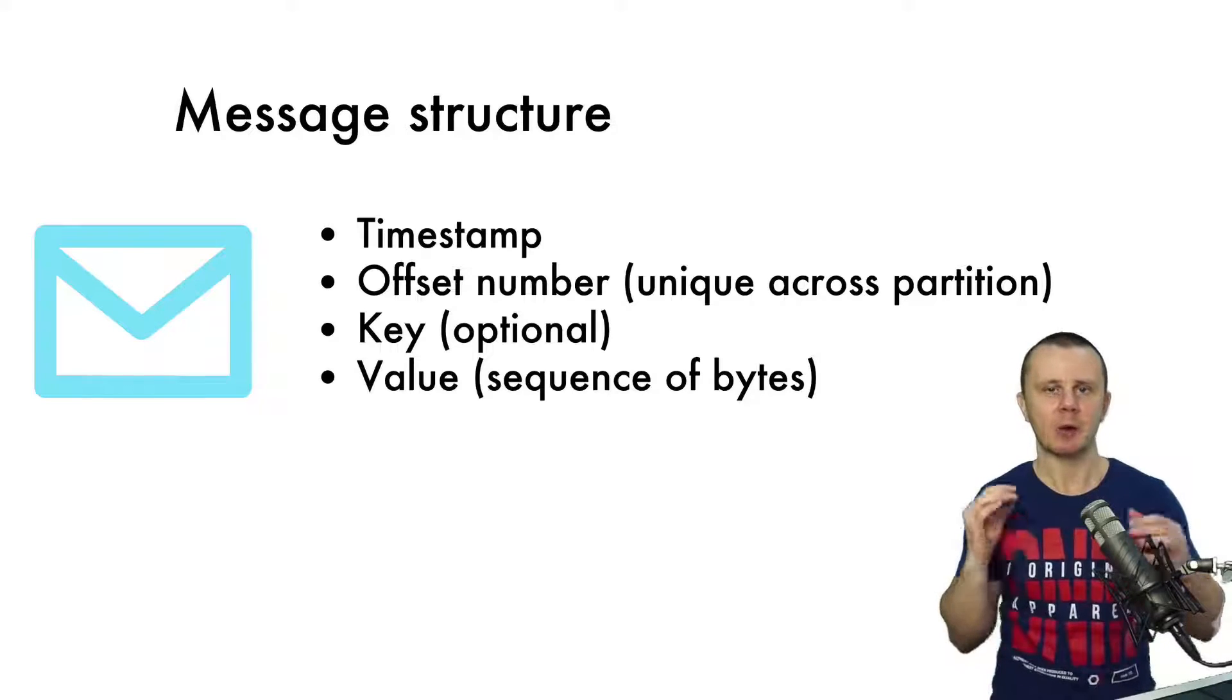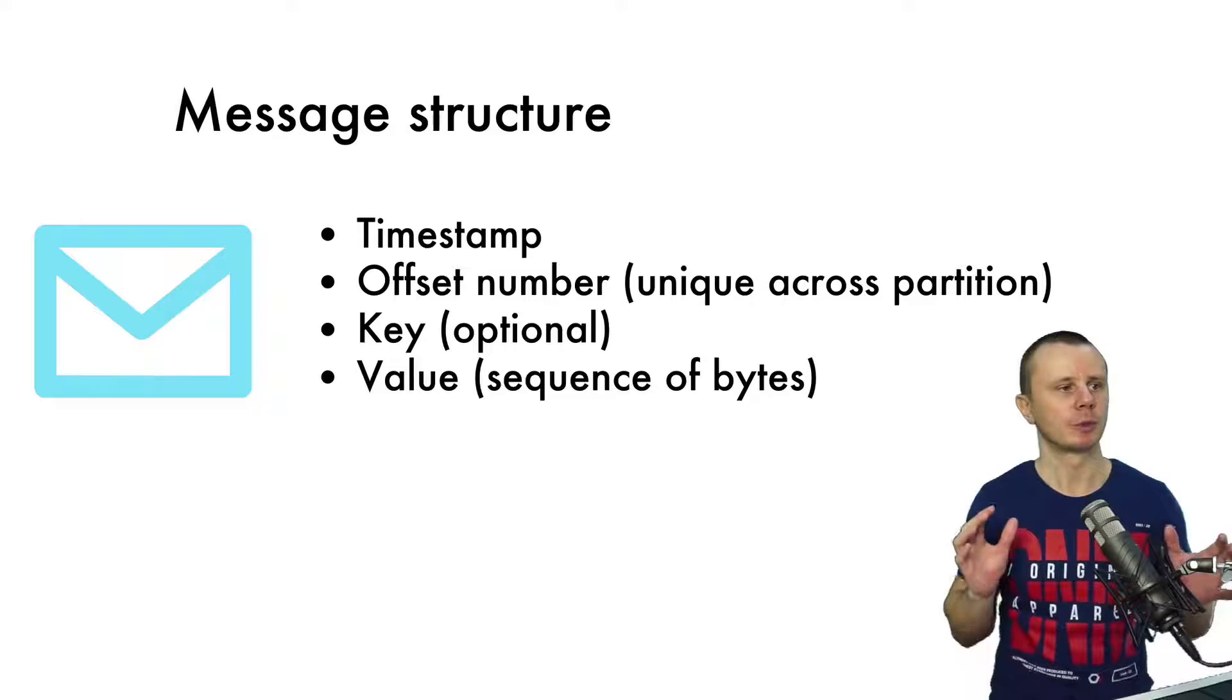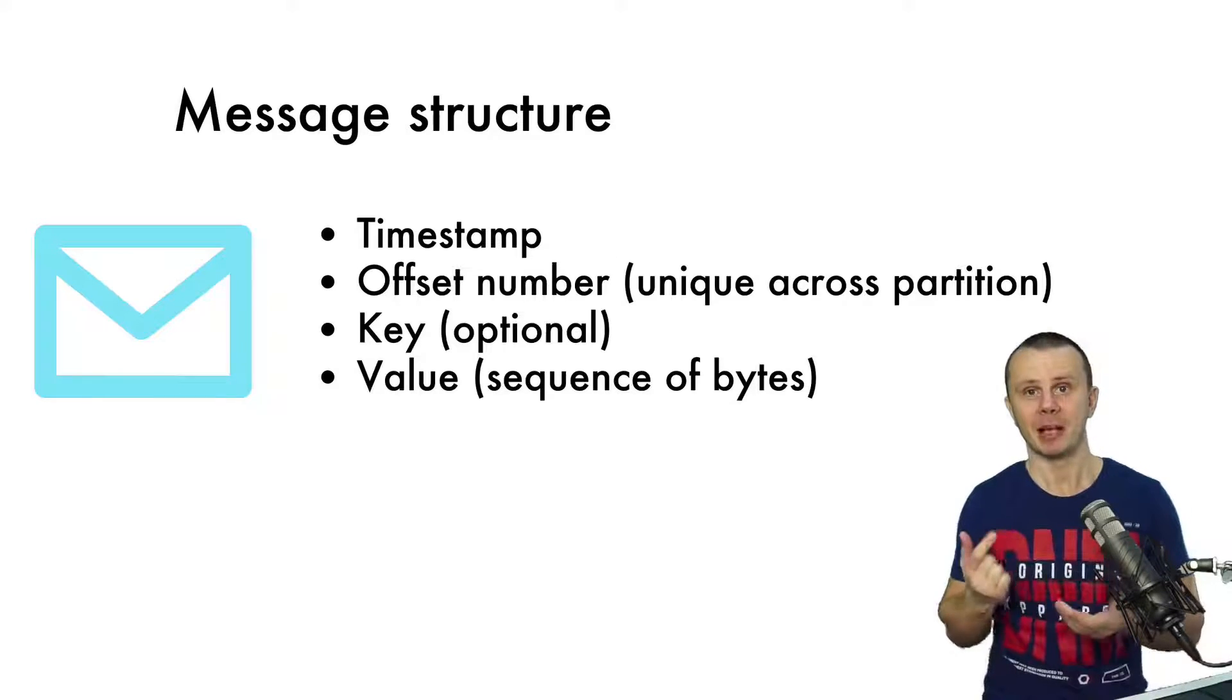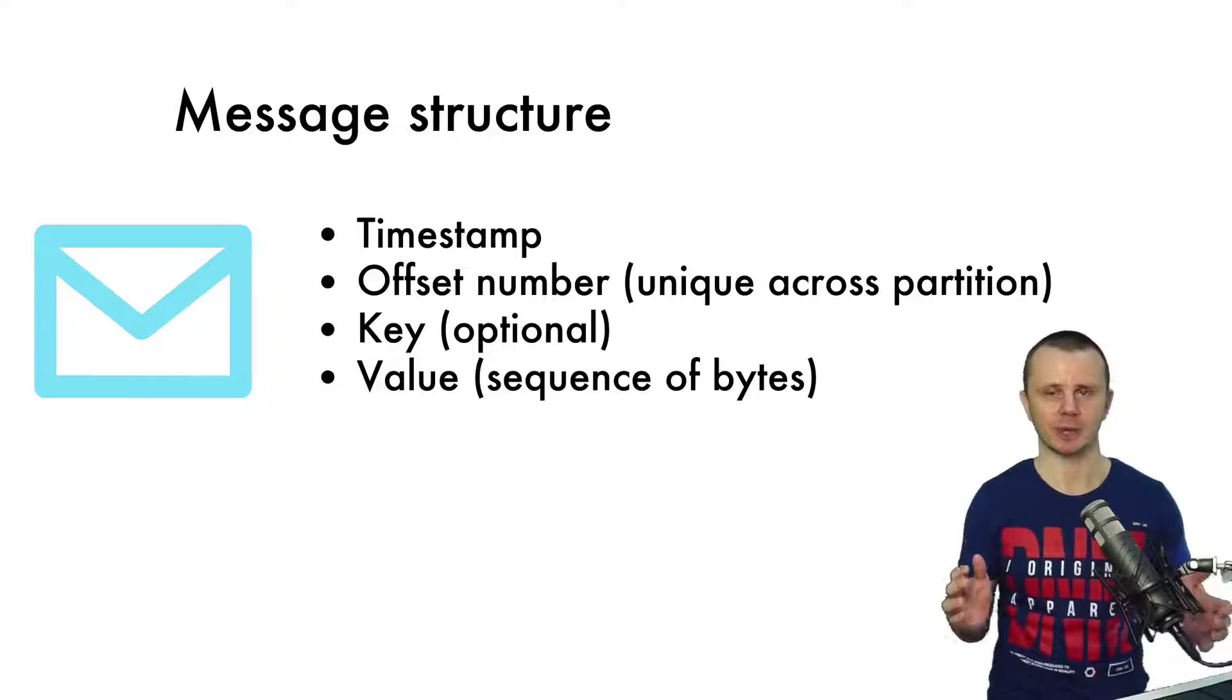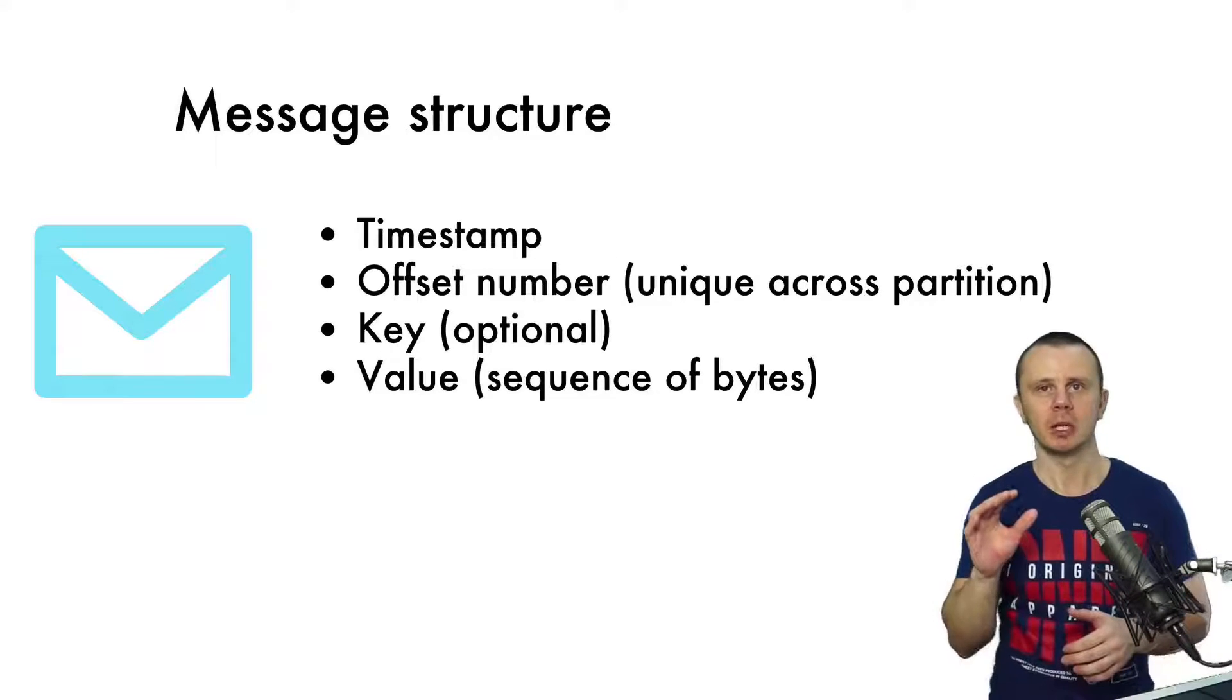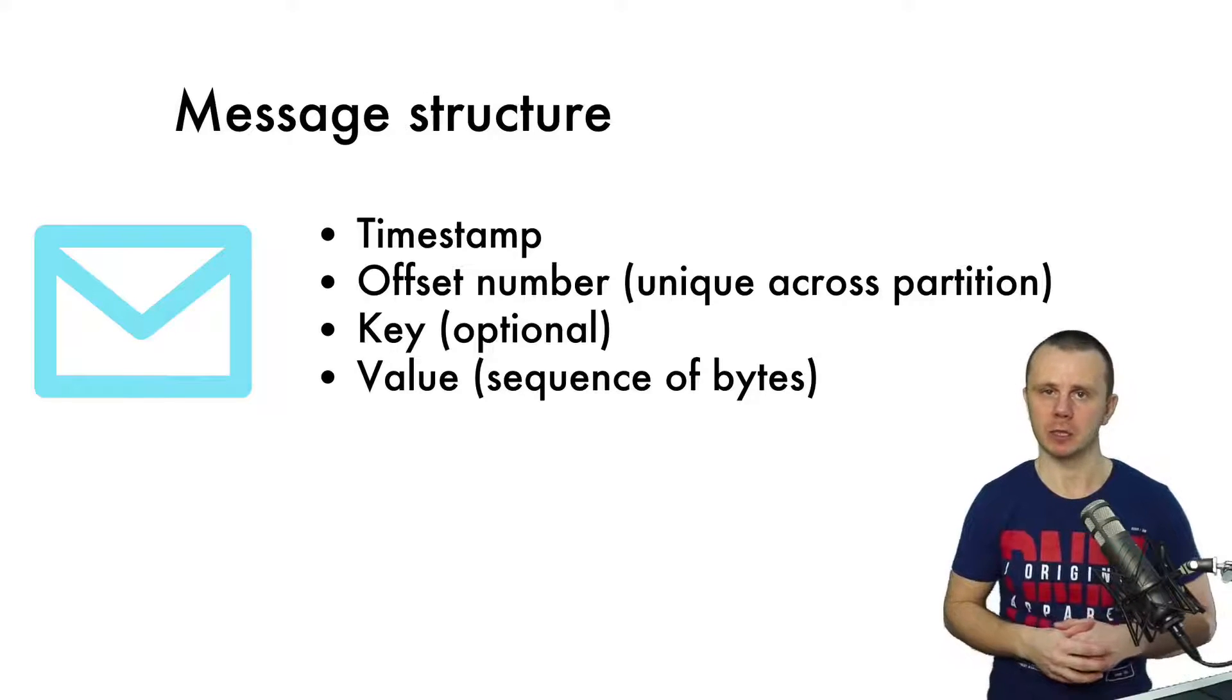So that's all about message structure. To summarize: every message has a unique offset number that is unique across the partition. Second, every message has a timestamp. And every message has basically a message body—that is the value—and an optional key. Also please keep in mind that you should keep every message as small as possible to achieve maximum efficiency of the Apache Kafka cluster.